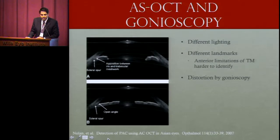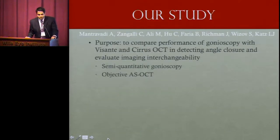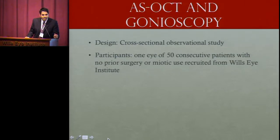Our study compared the performance of gonioscopy with Visante and Cirrus in detecting angle closure, to identify the interchangeability of these imaging modalities, to examine the semi-quantitative nature of gonioscopy versus the objective parameters of ASOCT, and specifically to identify how these different methods compare when evaluating patient risk for angle closure and identifying narrow angles.